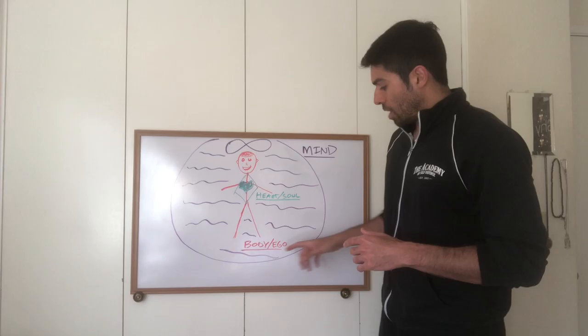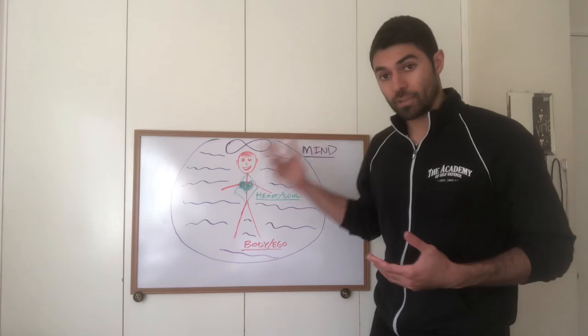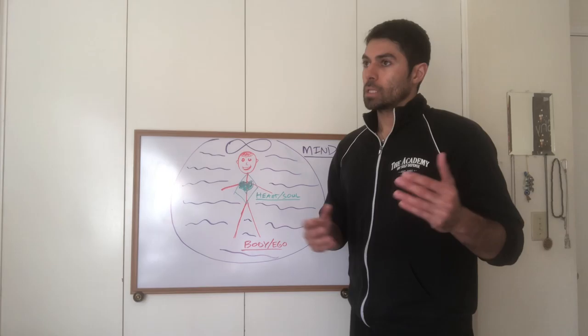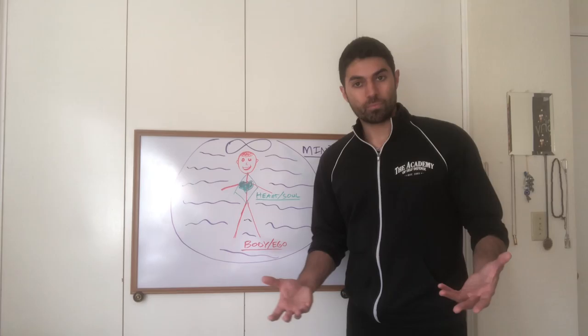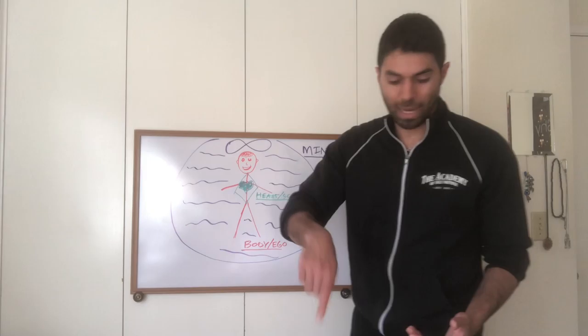When you are the ego, the personality, attaching to the body, attaching to the thoughts within mind that come from mind, you are seeking outcomes. You have expectations. You aren't in the moment. You aren't present. And this is a trap.